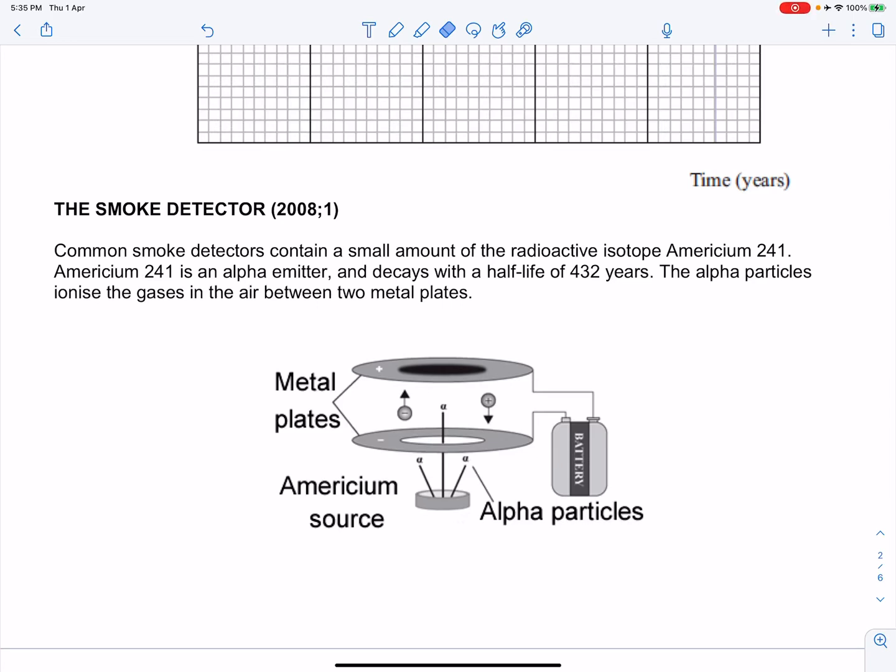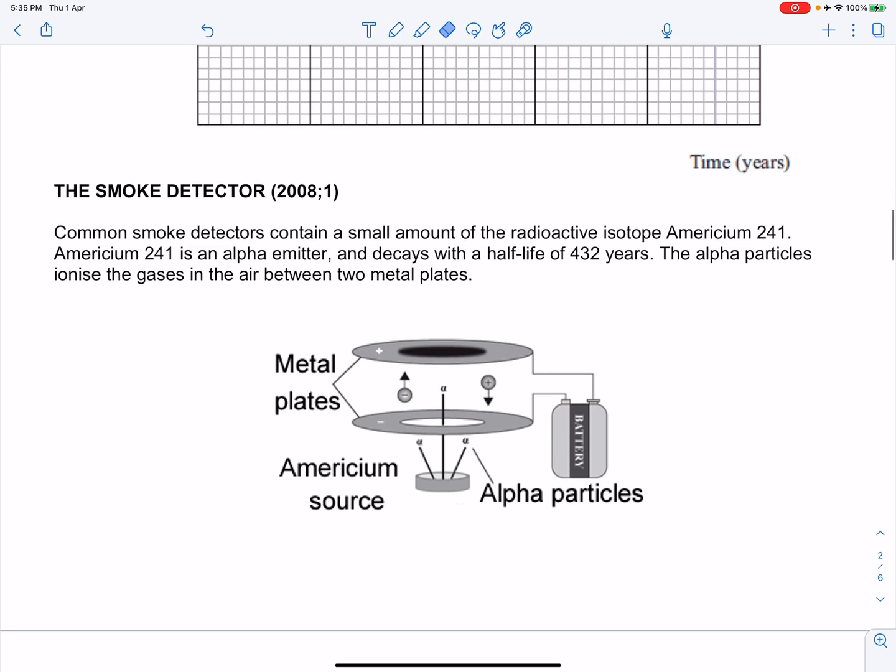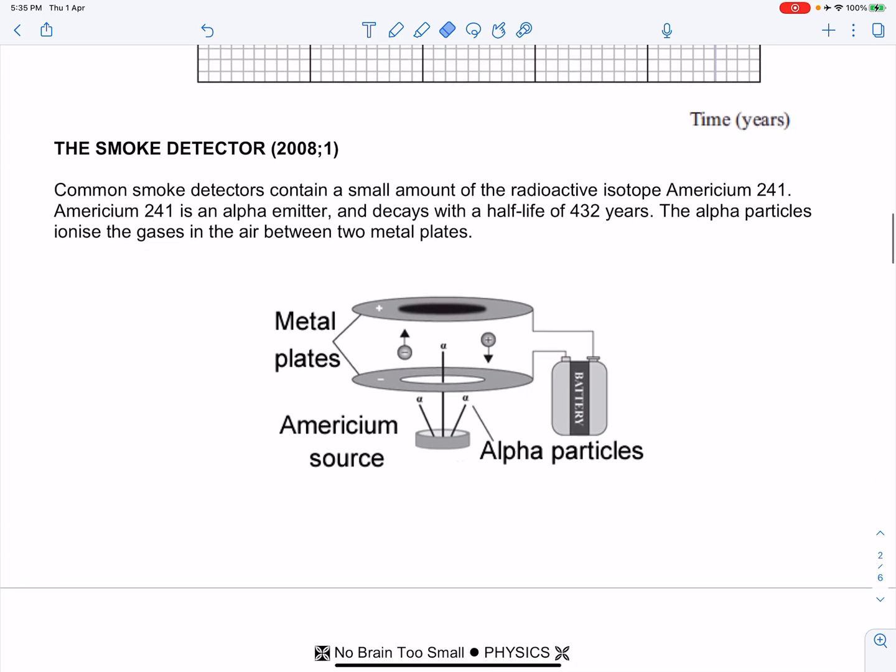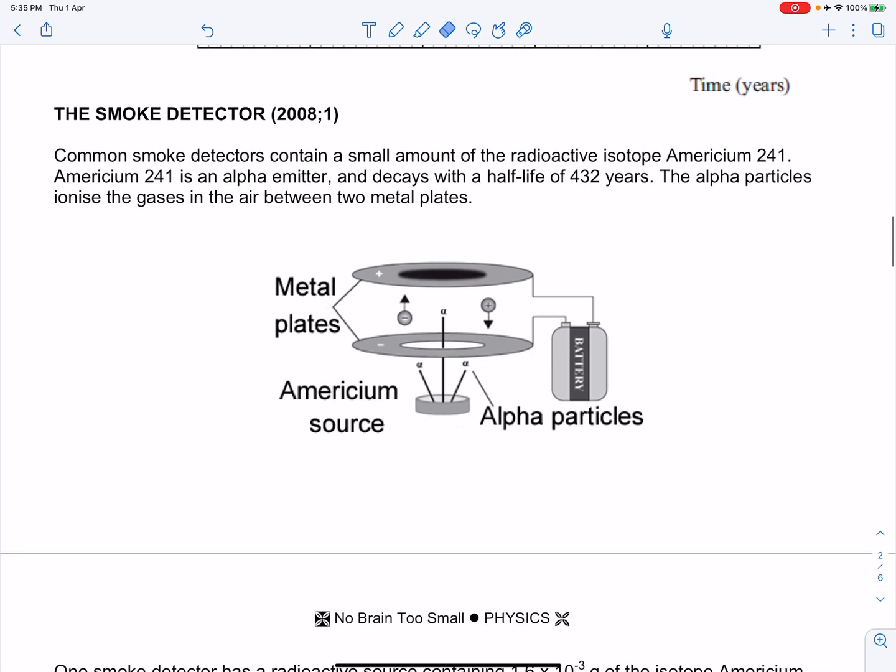I'm going to go through the 2008 question paper on the smoke detector. This is a half-life question. Common smoke detectors contain a small amount of the radioactive isotope americium 241.